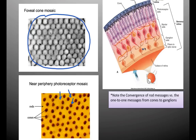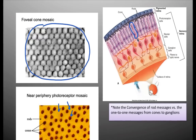Looking at a single cone, there is just one bipolar cell reaching the ganglion cell. But for rods, four of them go to one bipolar cell. So the messages of four rods get relayed together, versus a one-to-one ratio for cones, which makes cone vision more precise in what it actually sees. That covers the eye — understanding its structure and how it actually functions.